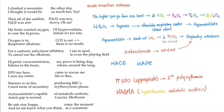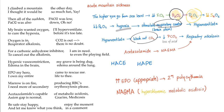I climbed a mountain the other day. I thought it would be so much fun. Then all of the sudden, PaO2 was low — oh no. My brain wanted oxygen. I'll hyperventilate to cure the hypoxia before it's too late. Oxygen is in, CO2 is out. Respiratory alkalosis, there is no doubt. For a carbonic anhydrase inhibitor, I am in need to cancel the alkalosis to even the playing field. Hypoxic vasoconstriction — my grave is being dug.